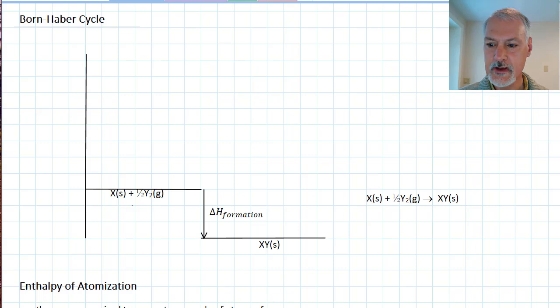In this Haber Cycle, we're essentially interested in taking a metal and a non-metal and forming an ionic material. We're going to apply Hess's Law, something we saw in an earlier unit, which means that if I want to determine the heat for this particular reaction, I could also look at an alternative path or another way of doing it.